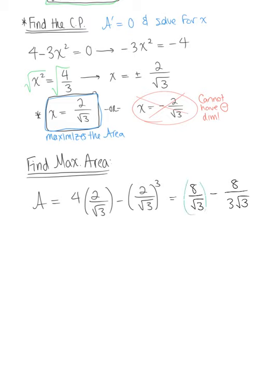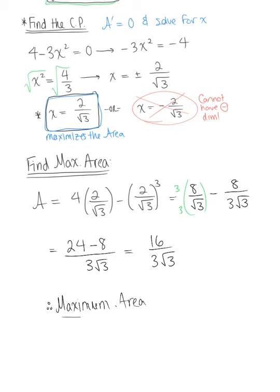And then we want to get that common denominator here. So we'll multiply the numerator and denominator of our first term by 3. So we're left with 24 minus 8 all over 3 by the square root of 3, which leaves us with a beautiful final answer of 16 divided by 3 times the square root of 3. So therefore the maximum area of this rectangle is 16 all over 3 multiplied by the square root of 3.